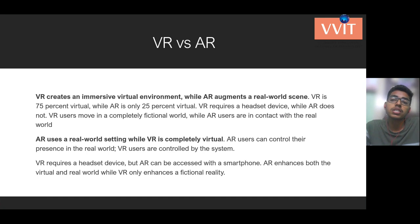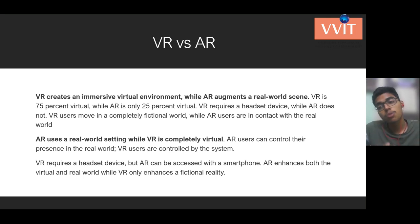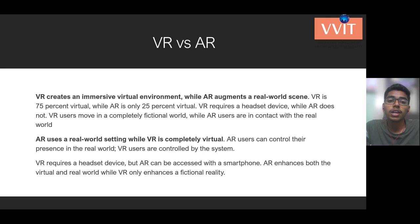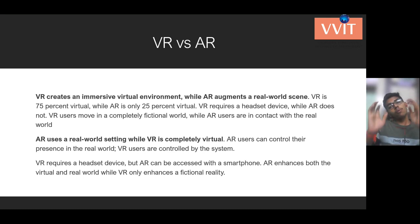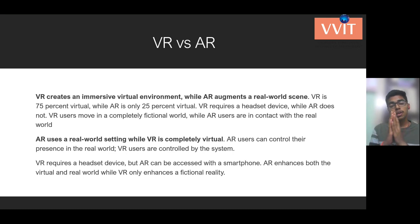So far we have discussed virtual reality, how it works, how it is developed, what augmented reality is, its applications, and how it works. Now let us discuss VR and AR in a comparative way. VR creates an immersive virtual environment, while AR augments a real-world scene. VR is 75% virtual, while AR is only 25% virtual. VR requires a headset device, while AR does not. VR users move in a completely fictional world, while AR users remain in contact with the real world. When a user wears a VR headset, they are completely in a different world, as seen in gaming zones at shopping malls with racing, adventure, or shooting simulators.